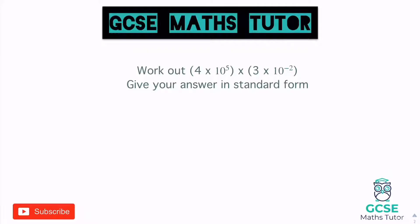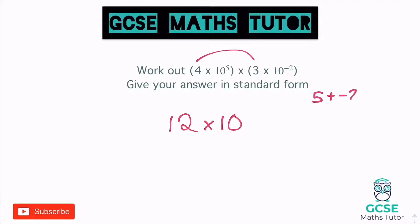Next: 4 times 10 to the 5 multiplied by 3 times 10 to the minus 2. We probably wouldn't want to write these out as ordinary numbers. Applying the same trick: 4 times 3 gives us 12. For the powers, we add them: 5 plus negative 2 is 5 take away 2, which gives a power of 3. So we have 12 times 10 to the power of 3.